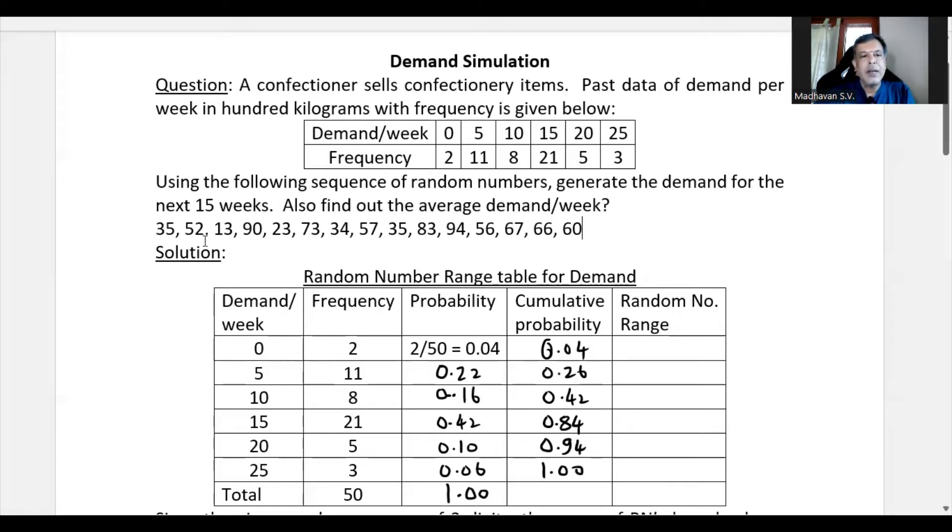Since the random numbers given here are two digit random numbers, we'll also create the random number range with the two digits only. First, it will start with the least two digit number is 0.0. We will be starting with 0.0 and since the cumulative probability is 0.04, it is nothing but 4%. So we need to have four random numbers. So when it starts from 0.0, it will go up to 0.3 only.